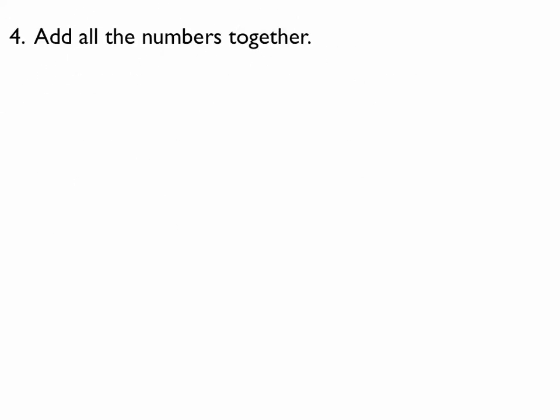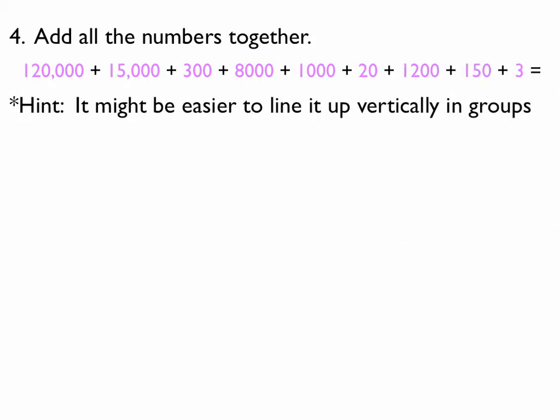So then, what I'm going to do is I'm going to add all the numbers together. So, here are all my numbers, all listed out horizontally. Now, it's not real easy to add that way. So, as a hint, it might be easier to line up vertically in groups. So, I'm going to basically add them up three at a time.